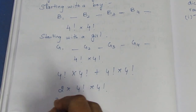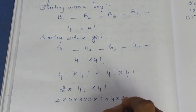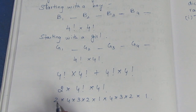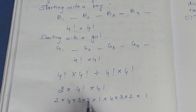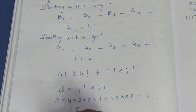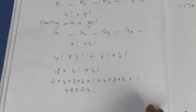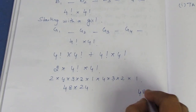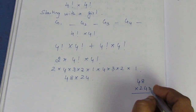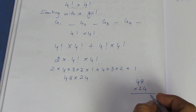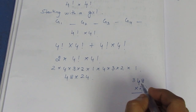So, 2 into 4! into 4! = 2 into 4 into 3 into 2 into 1 into 4 into 3 into 2 into 1. That is: 4 factorial is 24. So 2 into 24 into 24. 4 twos are 8, 8 threes are 24, 24 twos are 48. So 48 into 4 threes are 12, 12 twos are 24. Then 48 into 24 = 1152.